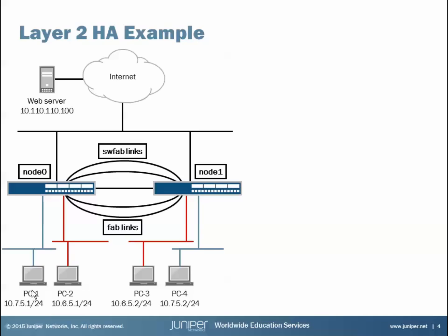We have four PCs: PC1 and PC4 are in the same subnet and connect to the blue VLAN; PC2 and PC3 are in the same subnet — a different subnet — and connect into the red VLAN. PC1 connects into the blue VLAN on Node 0, while PC4 connects into the blue VLAN on Node 1, requiring the SWFAB switching fabric link for same-VLAN communication across nodes. There's also a Reth interface connecting to the Internet and a web server for connectivity testing.